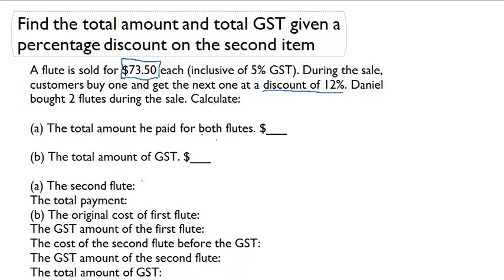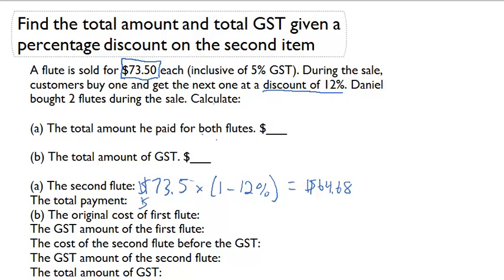The second flute has to be $73.50 times 1 minus 12%, and that's going to give us $64.68. The total payment has to be $73.50 for the first flute, plus $64.68 for the second flute, and that's going to give us $138.18. So the total price that he paid, including GST for both of them, was $138.18.